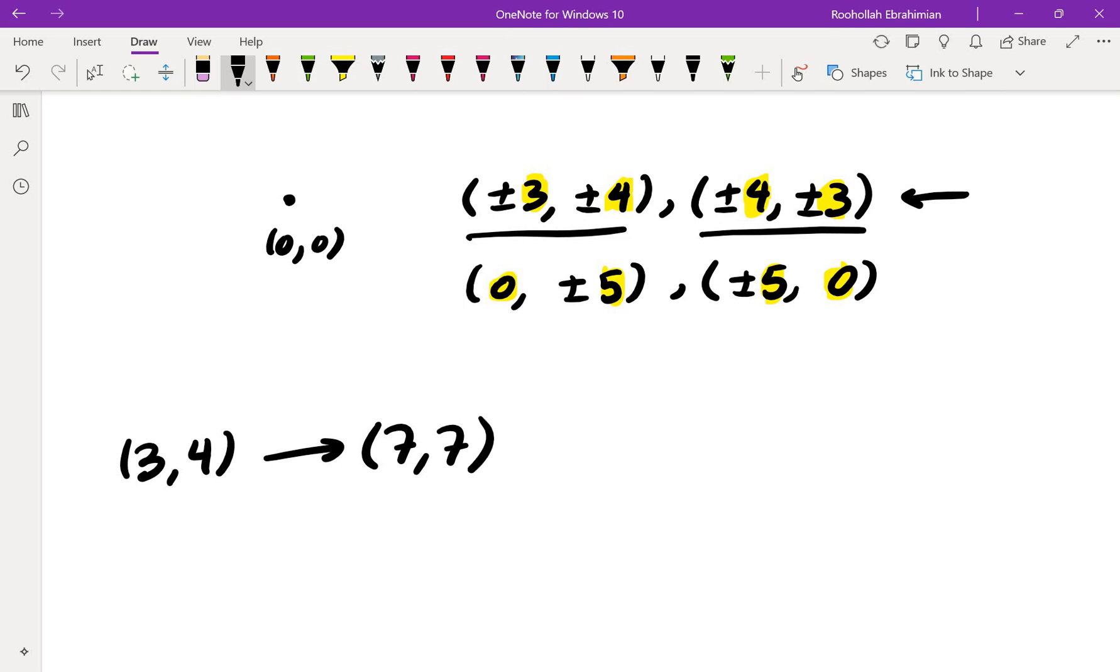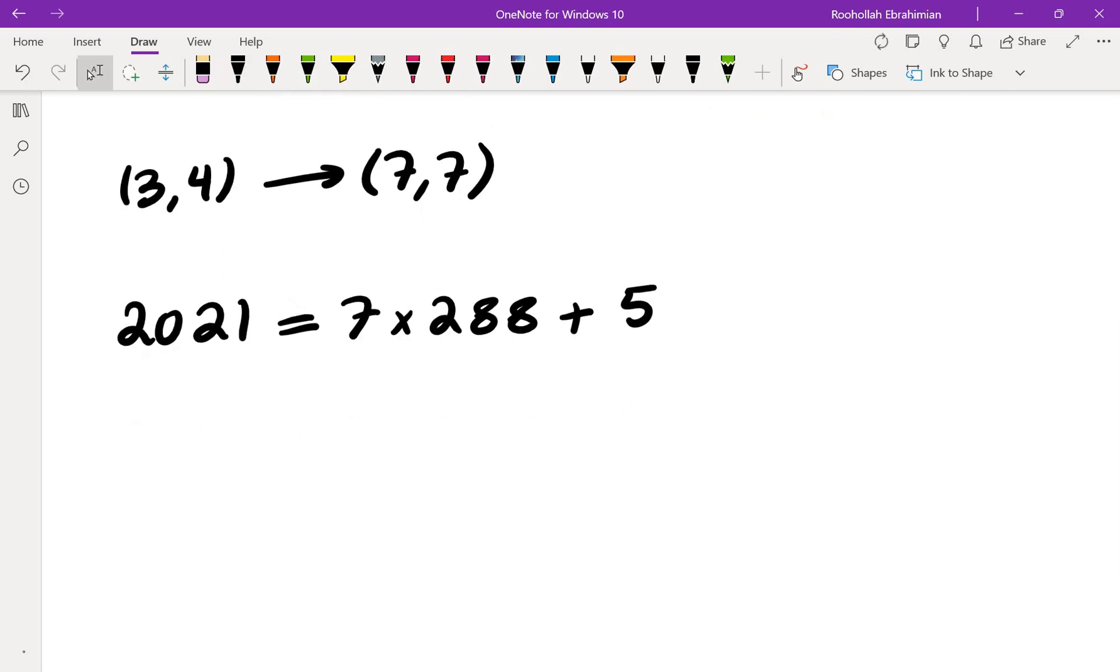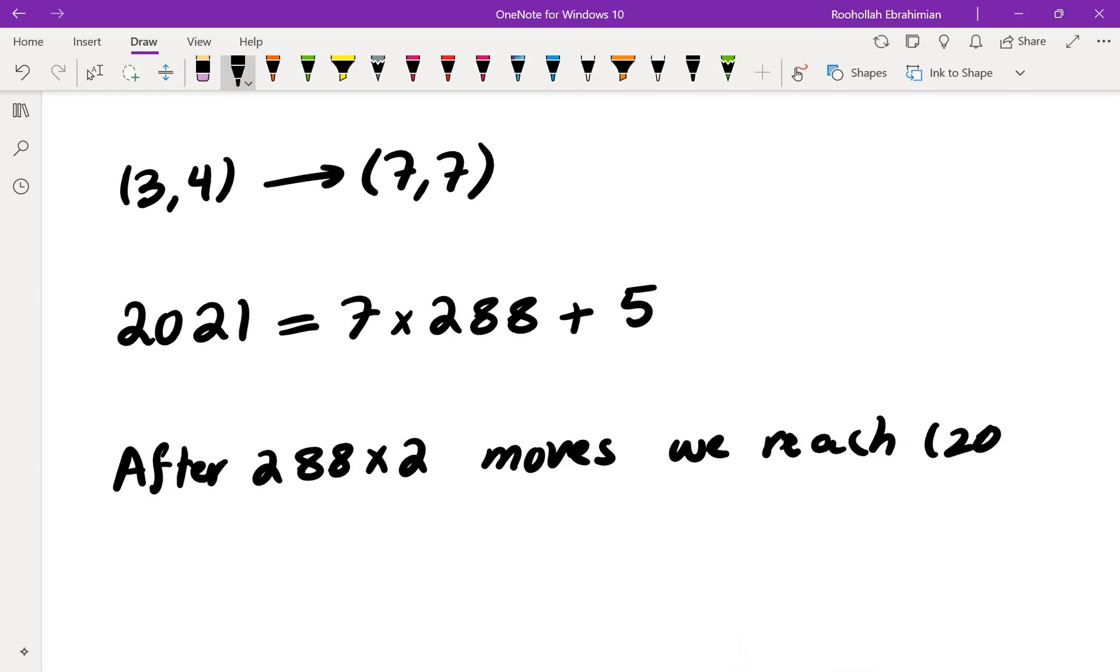Now if we repeat that, 2021 is not a multiple of 7. 2021 is 7 times 288 plus 5, so 2016 is divisible by 7. That means I cannot really get to 2021 exactly. But after 288 times 2 moves or hops, we reach (2016, 2016).